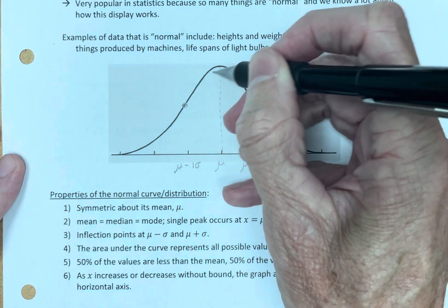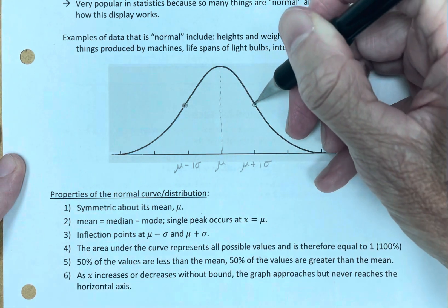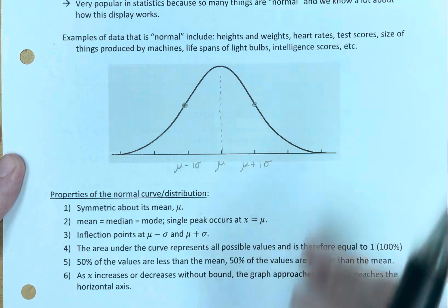And this is the mean plus one standard deviation, and the mean minus one standard deviation are the inflection points. Again, the graph is opening down here. Once you get to here, the graph is opening up.